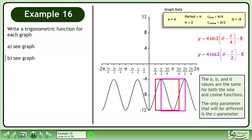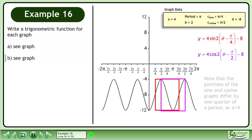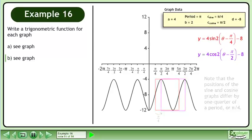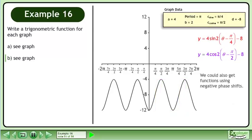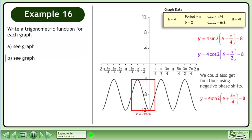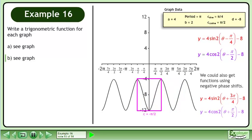The a, b, and d values are the same for both the sine and cosine functions. The only parameter that will be different is the c parameter. Note that the positions of the sine and cosine graphs differ by one quarter of a period, or pi over 4. We could also get functions using negative phase shifts. Our second sine function is y equals 4 sin(2theta plus 3pi over 4) minus 8. Our second cosine function is y equals 4 cos(2theta plus pi over 2).